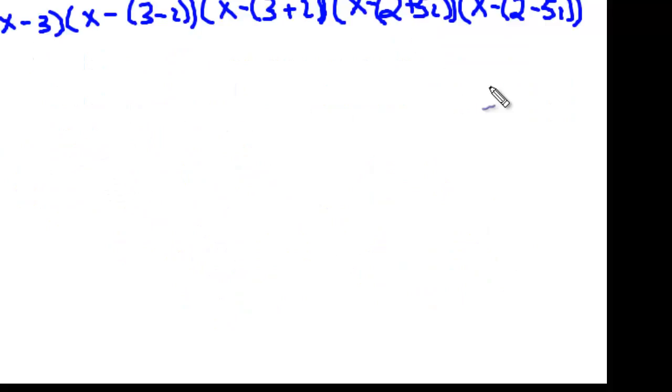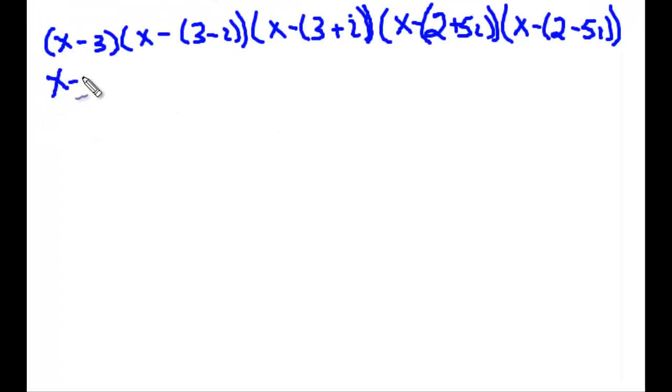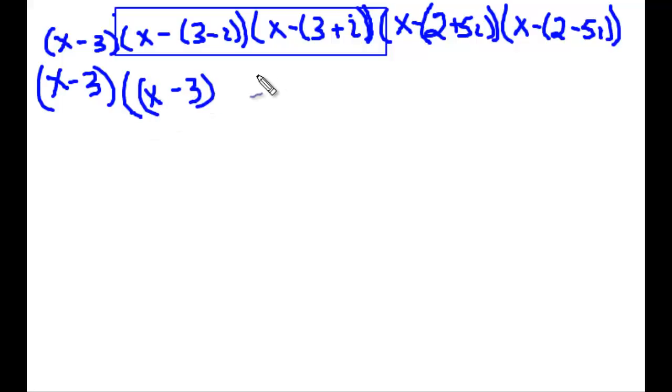Let me clear this off and show you. So now that I've written this out, let me show you how to simplify it. We're going to work with the complex numbers first, so we'll leave this x minus 3. And we're going to start off with this pair first. So we can rewrite this as x minus 3 plus i and x minus 3 minus i.